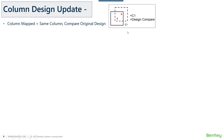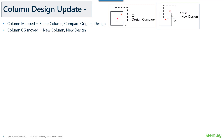Under column design update, first we understand what happens when a column has been mapped. If a column has been shifted but is still identified as the same column compared to the original location, the original or frozen design will be compared and checked for the changes in the revised analysis. The second case is if the CG of the shifted column was outside the locus of the original location — it will be treated as a new column, named NC1, denoting new column 1, and a new design will be formed.